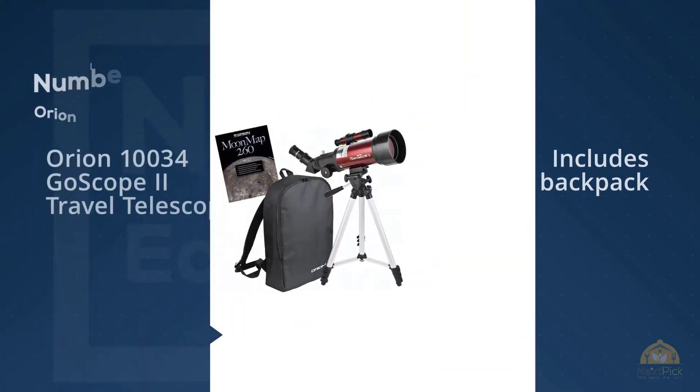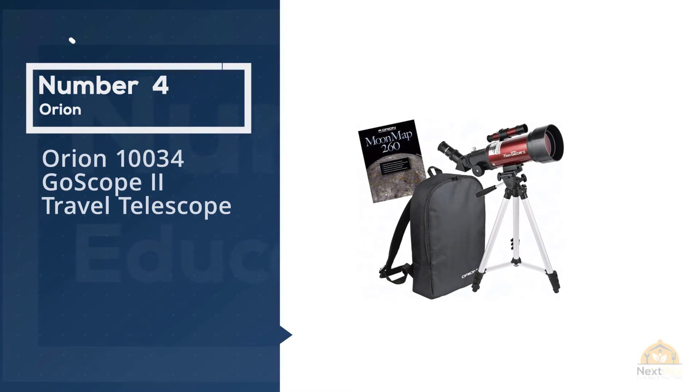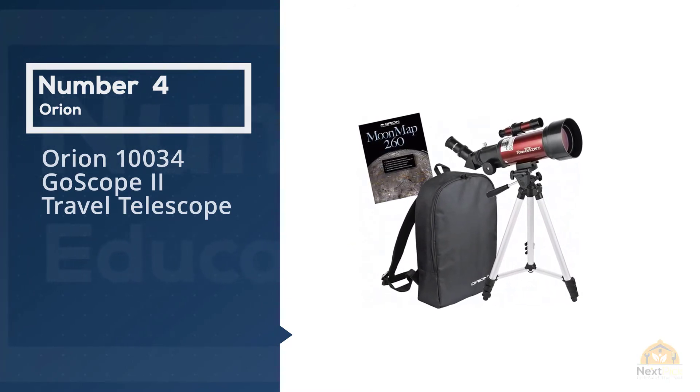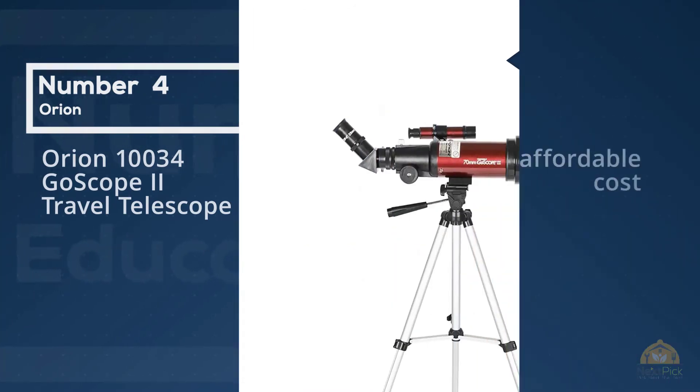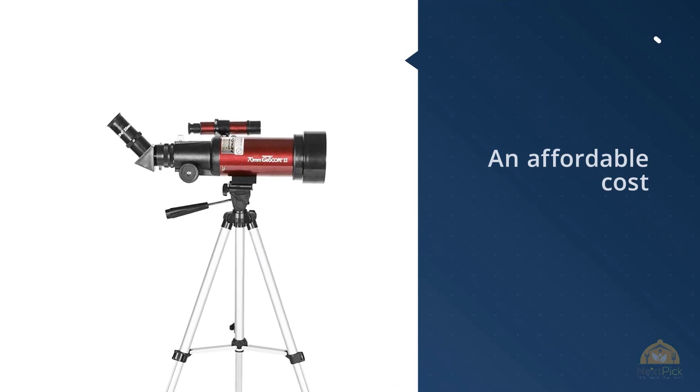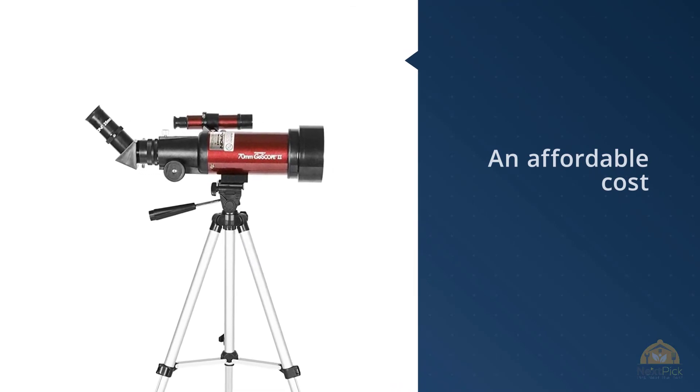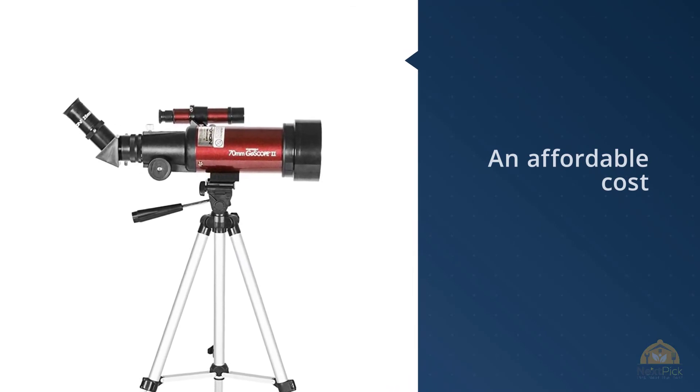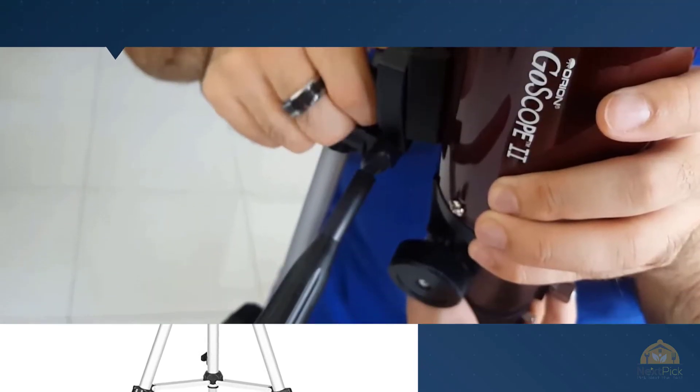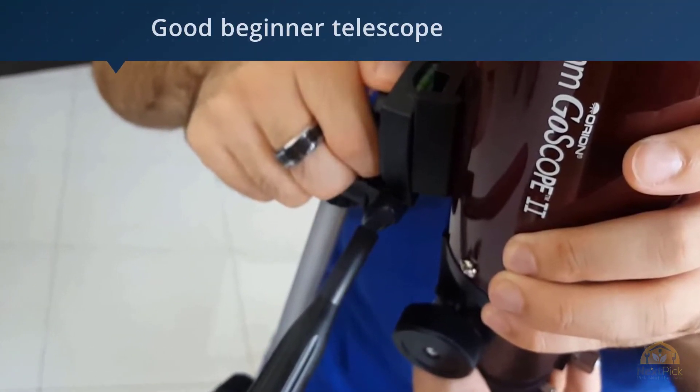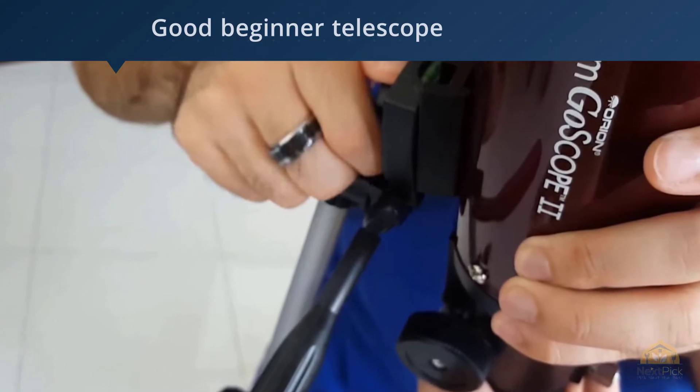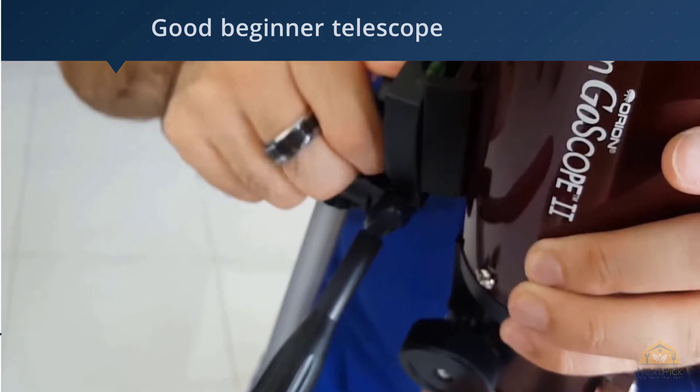Number four: Orion 10034 GoScope travel telescope with amazing features at an affordable cost. Orion GoScope is a good beginner telescope to get your kids started in astronomy. It's a portable telescope that you can pack at any time and take anywhere to get the best stargazing experience.